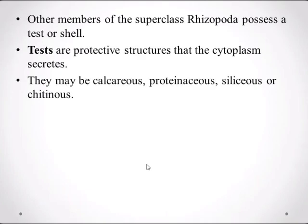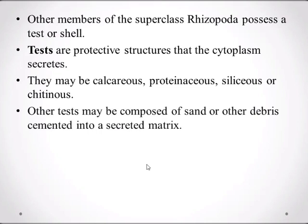Other members of the superclass Rhizophorea possess a test, or shell. Tests are protective structures that the cytoplasm secretes. They may be calcareous, proteinaceous, siliceous, or chitinous — made up of calcium, proteins, silica, or chitin respectively. Other tests may be composed of sand or other debris cemented into a saturated matrix.